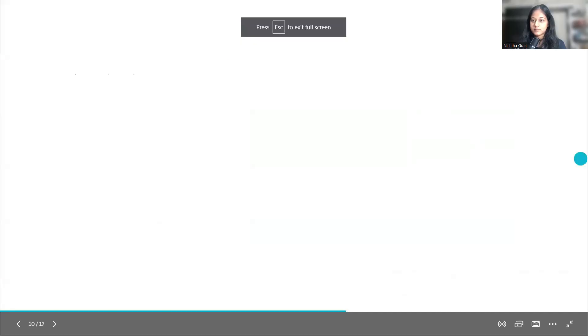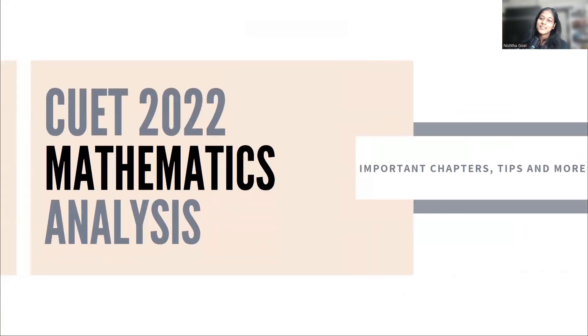Normalization will be set in and the overall level should be like this because NTA won't make one slot very easy and one slot very difficult. To get a general idea of how the paper was in CUET 2022, this may help you in some way or the other.